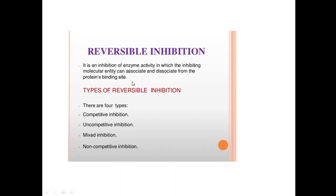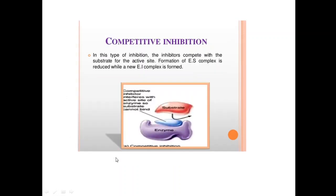In reversible inhibition, the inhibitor can bind and also dissociate — meaning the substrate still has chances to bind. The types of reversible inhibition are four: competitive inhibition, uncompetitive inhibition, mixed inhibition, and non-competitive inhibition.